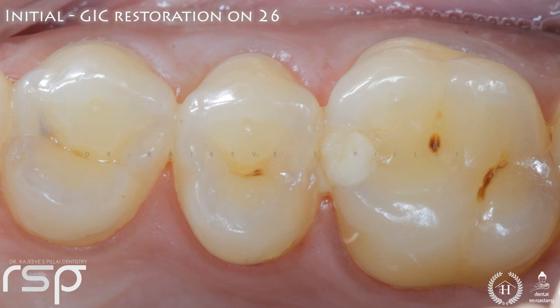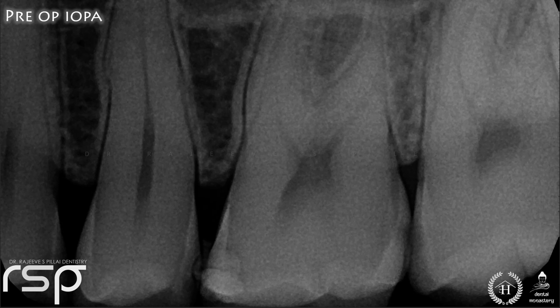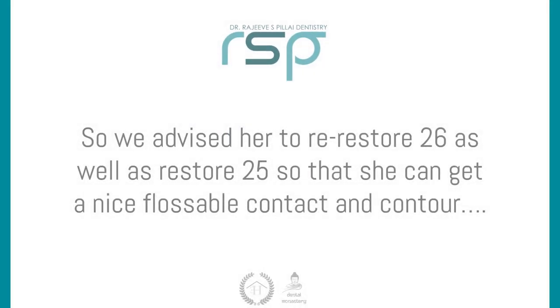This is a 25-year-old female patient who had a GIC filling done on 2-6 around two years back. She was having food impaction and severe discomfort in relation to that tooth. She visited four or five dentists but they all suggested that it was fine and there was no need for any further treatment. You can see the food impaction clinically too. On radiographic examination you can see an improper fractured restoration with a poor contour on 2-6. You can also see caries on the distal aspect of 2-5, which may have occurred due to iatrogenic nicking of enamel while preparing the cavity previously. So we advised her to re-restore 2-6 as well as restore 2-5 so that she can get a nice proximal contact and contour.